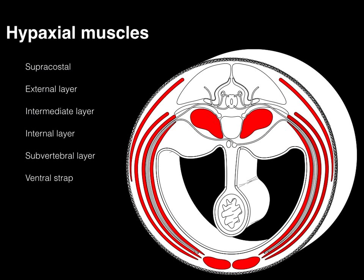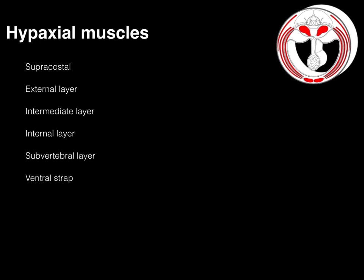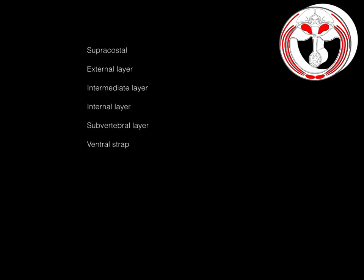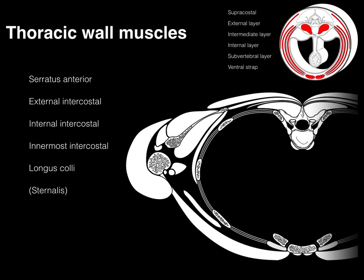In the hypaxial muscles in any part of the trunk — whether the neck, thoracic, abdominal, or pelvic perineal region — we can identify these different layers of hypaxial muscles. Now let's put that pattern in the upper corner and focus on thoracic wall muscles, taking that pattern and applying it to this picture.